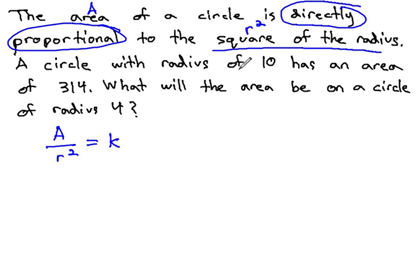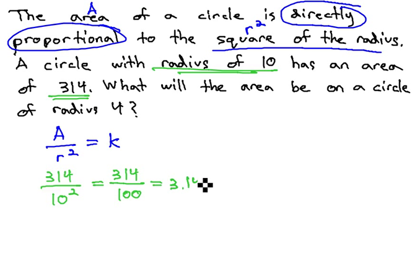We know the circle with a radius of 10, so we'll replace the r with 10 squared, has an area of 314. Order of operations asks us to do the exponent first, 314 over 100, which when we divide, we get 3.14 for our constant of variation.